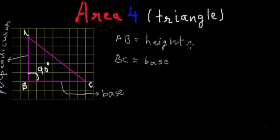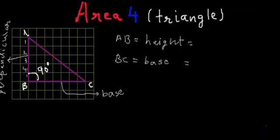So what can we say about the length of the base of the triangle? As we know it is drawn over a grid where each small part of the grid is of unit length. So what can be said about the length AB, which is the height? It is 1, 2, 3, 4 and 5. So the height of the triangle is 5 units.